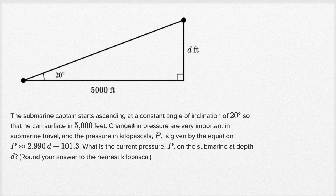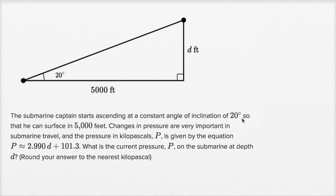The submarine captain starts ascending at a constant angle of inclination of 20 degrees so that he can surface in 5,000 feet. So it looks like this is the submarine right here, and he starts surfacing, ascending at an angle of 20 degrees.